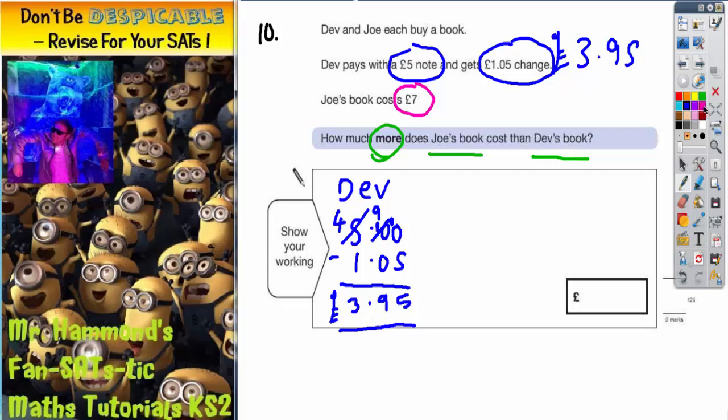Now let's move on to Joe. Joe's book we already know costs £7. So there's nothing to work out there. We're ready to do the last bit.